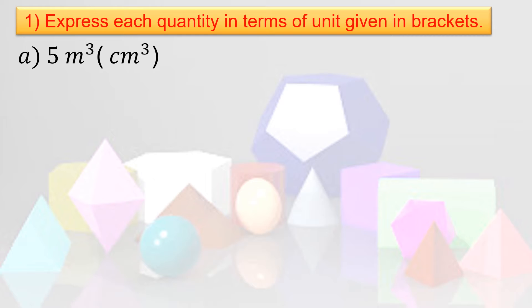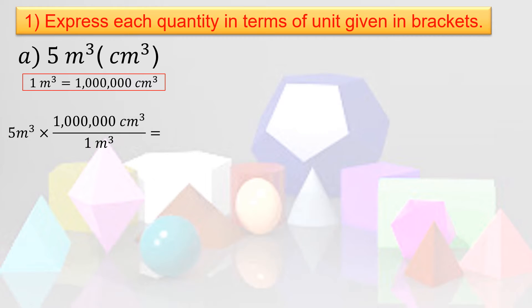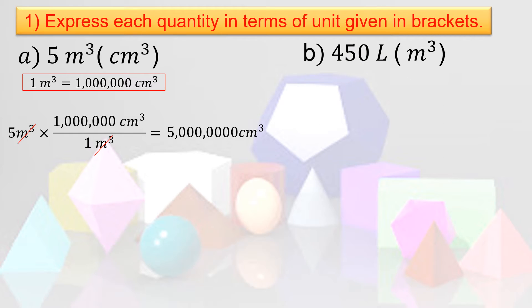Let us express each quantity in terms of the unit given in brackets. We are going to convert 5 cubic meters to cubic centimeters. We know that 1 cubic meter equals 1 million cubic centimeters. So: 5 cubic meters times 1,000,000 cubic centimeters over 1 cubic meter. We cancel cubic meters, then multiply 1,000,000 times 5, which equals 5,000,000. So 5 cubic meters equals 5 million cubic centimeters.